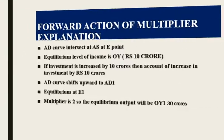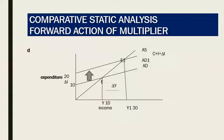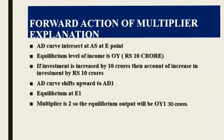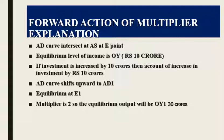The AD curve intersects at equilibrium point E, and AD1 intersects at E1. The equilibrium level of income is OY, that is 10 crore. If investment is increased by 10 crore, the AD curve shifts upward to AD1, and the new equilibrium is at E1. Since the multiplier is 2, the equilibrium output becomes OY1, that is 30 crore. The change in income is 20 crore — as investment increased by 10 crore and the multiplier is 2, income increases by 2 into 10, which equals 20 crore.